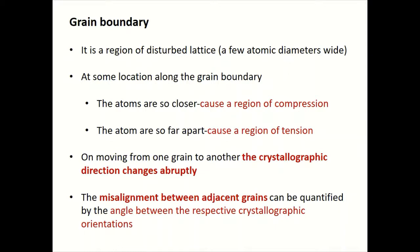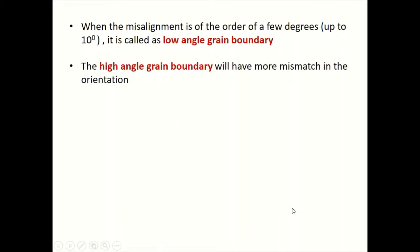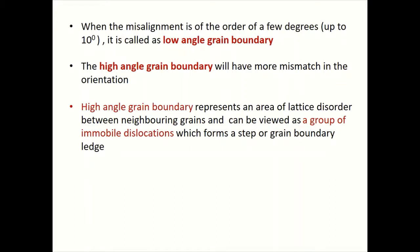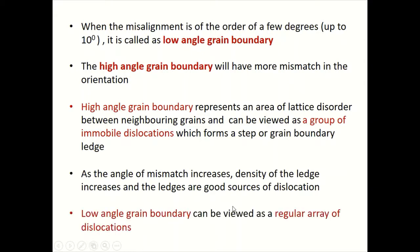The misalignment between adjacent grains can be quantified by the angle between the respective crystallographic orientations. When the misalignment is of the order of a few degrees — up to about 10 degrees — it is called a low angle grain boundary. High angle grain boundaries have more mismatch in orientation and represent areas of lattice disorder between neighboring grains. They can be viewed as a group of immobile dislocations forming grain boundary ledges, and as the angle of mismatch increases the density of ledges increases.